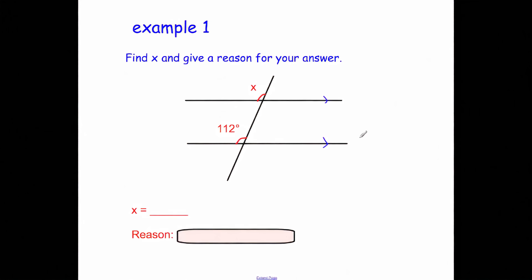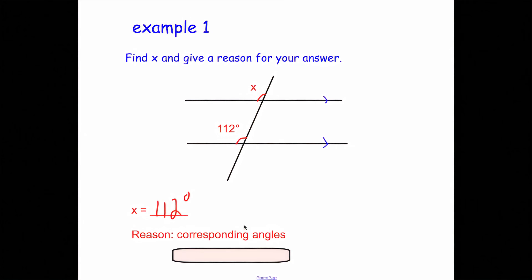Example one: find X and give a reason for your answer. We have parallel lines and a transversal. Both angles are obtuse and in the same position — both above the parallel line on the left-hand side — so they're corresponding angles. You can see the upside-down F shape. That means they're the same, so if this is 112 degrees, X is 112 degrees. The reason is they are corresponding angles.